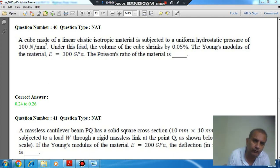A cube made of a linear elastic isotropic material is subjected to hydrostatic pressure of 100 N/m². Under this load, the volume of the cube shrinks by 0.05%. The Young's modulus of the material is 300 GPa. The Poisson's ratio of the material is...